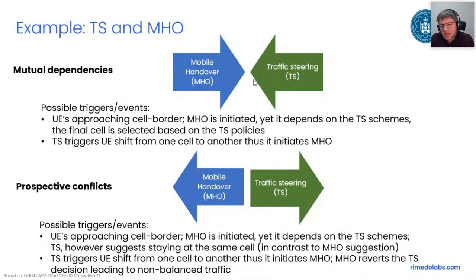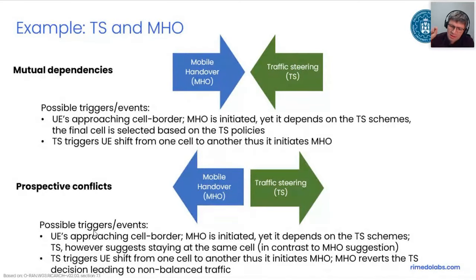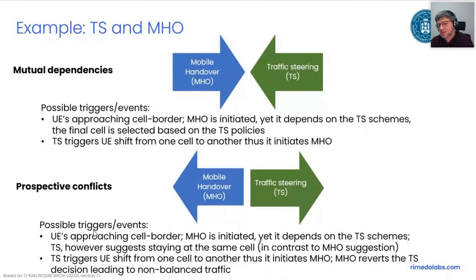But there can also be conflicts. If a user is approaching a cell border and MHO is initiated, traffic steering may enter and say 'no, you cannot do this because my policy forbids it — this type of traffic must be steered to a different type of base station than what MHO is suggesting.' And the opposite as well: traffic steering may trigger something and MHO may revert it back. These are very straightforward examples of conflicts.